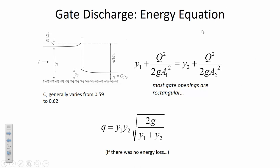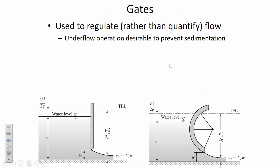A coefficient of contraction of 0.59–0.62 means that if the gate is open one foot, the depth continues contracting until it reaches about 0.59–0.62 feet. The orifice equation for the gate states that the upstream depth dictates the velocity under the gate. The orifice equation from fluid mechanics is velocity = √(2gh); here it's customary to measure the full upstream depth. The coefficient of discharge is a function of the coefficient of contraction and the upstream and downstream depths.